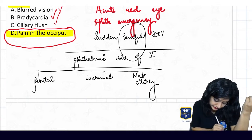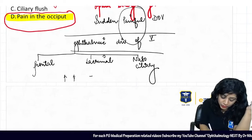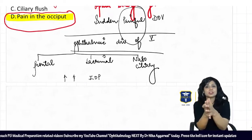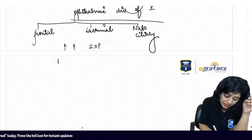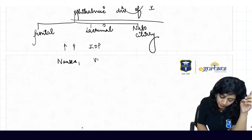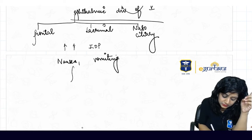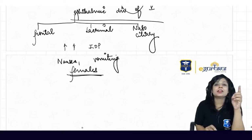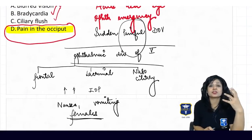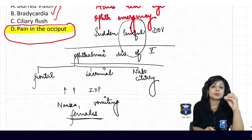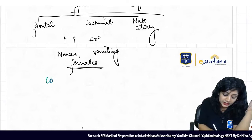The three branches are frontal, lacrimal, and nasociliary. When there is very high intraocular pressure due to sudden closure of the angle of the anterior chamber, the pressure becomes very high. This raised intraocular pressure causes nausea and vomiting. This condition is more common in middle-aged females. Due to the very painful condition we also get ciliary flush, and bradycardia is present as well.